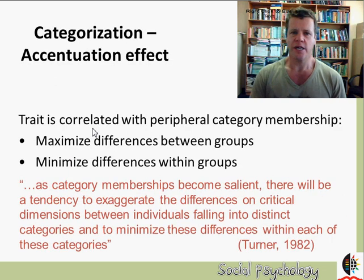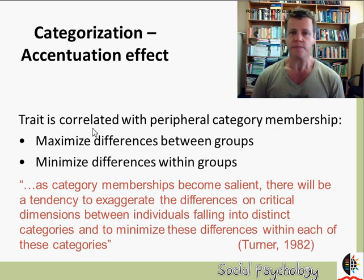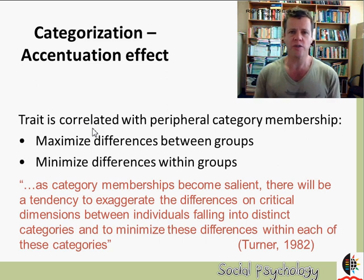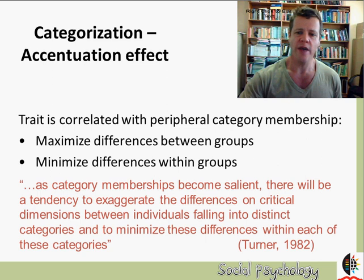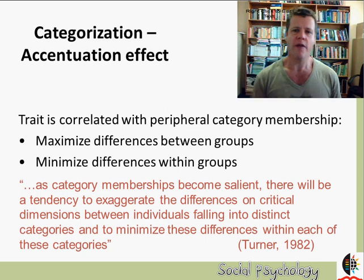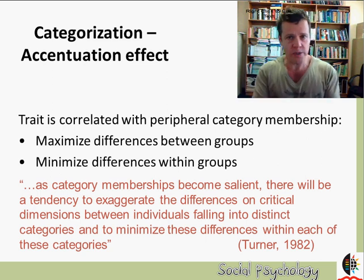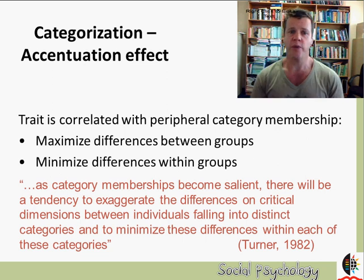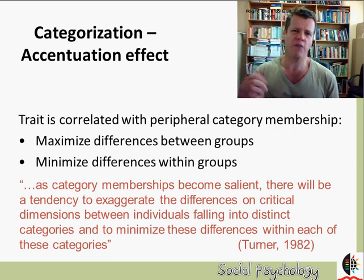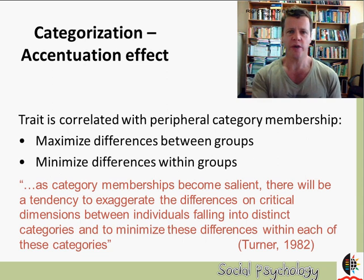Categorization has a number of consequences. The important one is that categorization produces an accentuation effect. Once we categorize individuals into groups, we tend to overestimate the similarity between people within groups and overestimate the differences between groups. Categorization creates a kind of perceptual distortion in which we accentuate differences between groups and minimize differences within groups.